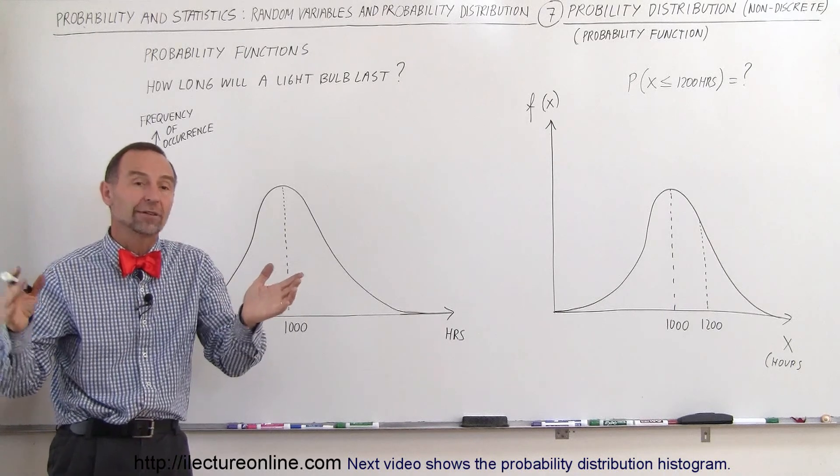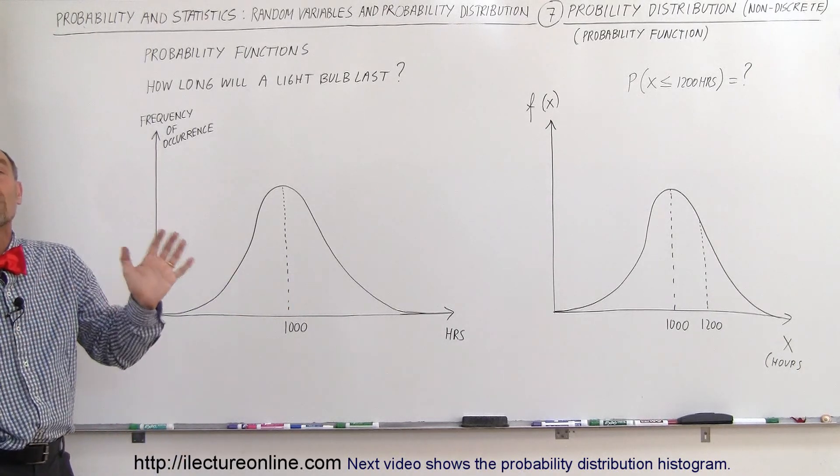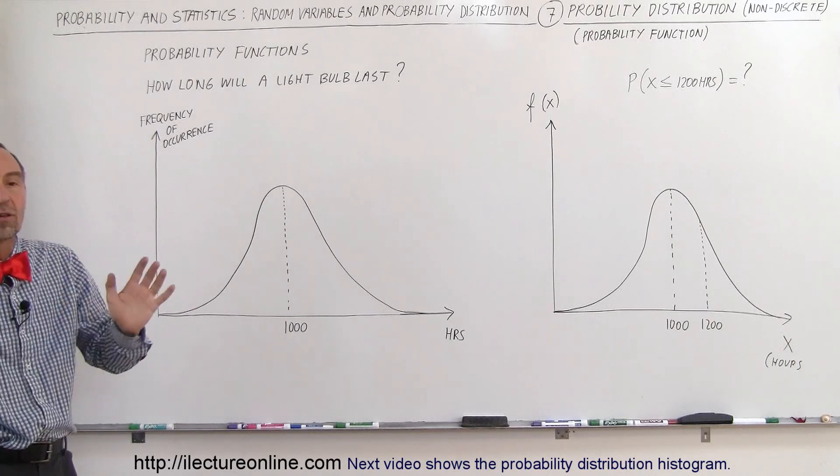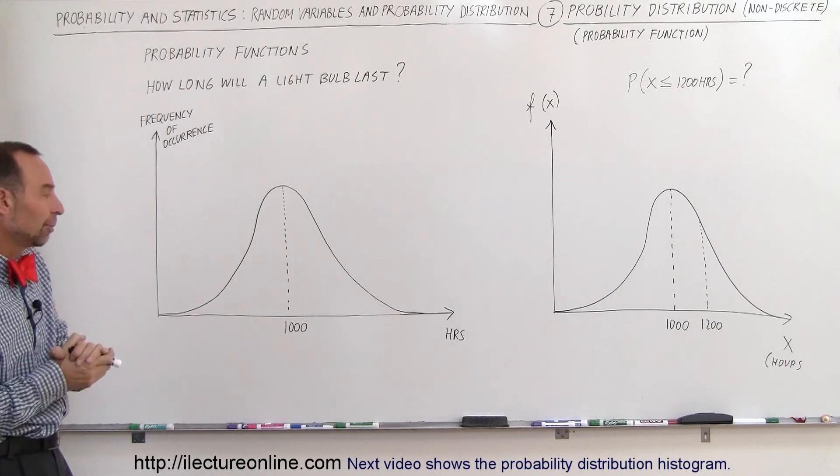Twelve hundred hours and five minutes and two seconds, and there's an infinite range, a continuous possibility, a continuous number of values that are possible for the length of the life of a light bulb.